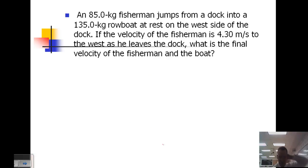Another problem. An 85-kilogram fisherman jumps from a dock into a 135-kilogram rowboat at rest on the west side of the dock. The velocity of the fisherman is 4.30 meters per second to the west as he leaves the dock. What is the final velocity of the fisherman in the boat? So this will be an inelastic collision problem.